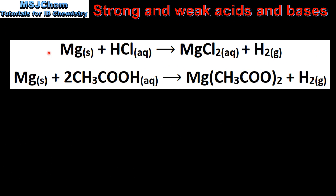Next we look at rate of reaction. In the top reaction, magnesium is reacting with a strong acid which is hydrochloric acid. In the bottom reaction, the magnesium is reacting with ethanoic acid which is a weak acid. In both reactions hydrogen gas is produced, however in the first reaction with a strong acid the hydrogen gas will be produced at a faster rate than the second reaction which is with a weak acid.